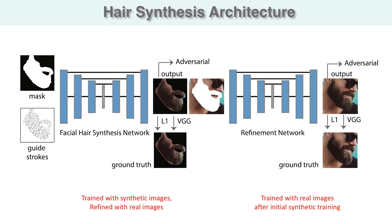When training our two-stage pipeline, we first train the initial synthesis network in isolation on the large-scale synthetic dataset. We then refine this network by training it end-to-end with the refinement network on the set of real facial hair images.